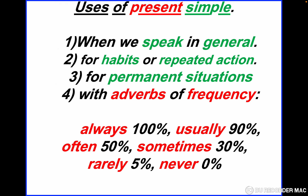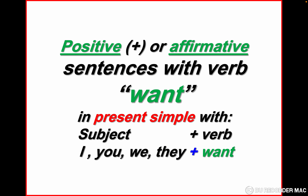Uses of Present Simple — note that 'uses' here is a noun in the plural form, not a verb. We use Present Simple when we speak in general. We use Present Simple for habits or repeated actions. We use Present Simple for permanent situations. And we use Present Simple with adverbs of frequency like: always, usually, often, sometimes, rarely, and never.